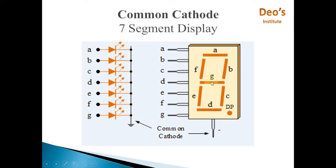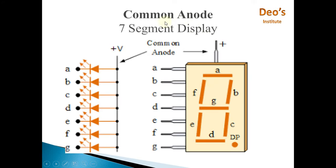In common anode 7 segment display, all positive ends of LEDs are connected to common and this common is connected to ground, and negative terminals are open. In this case, zero on the pin will glow the LED. So if A is 0 and rest all are 1, then A and B are 0 and rest all are 1.